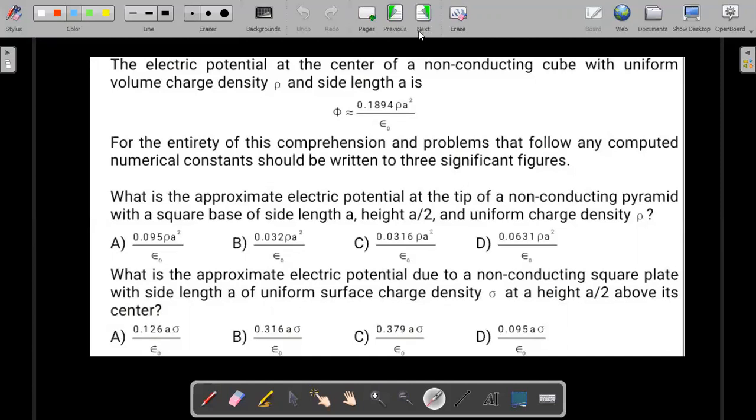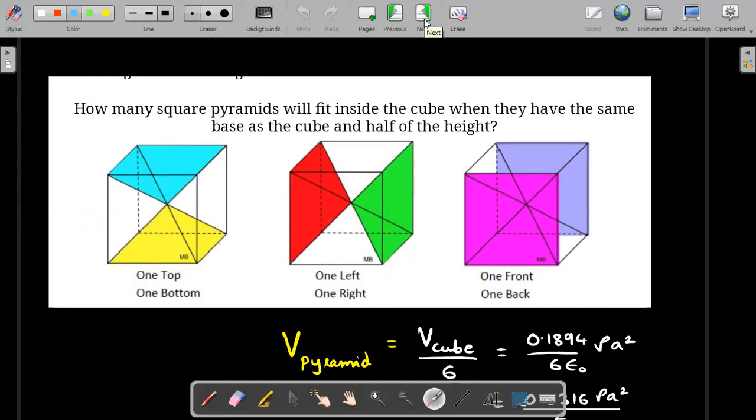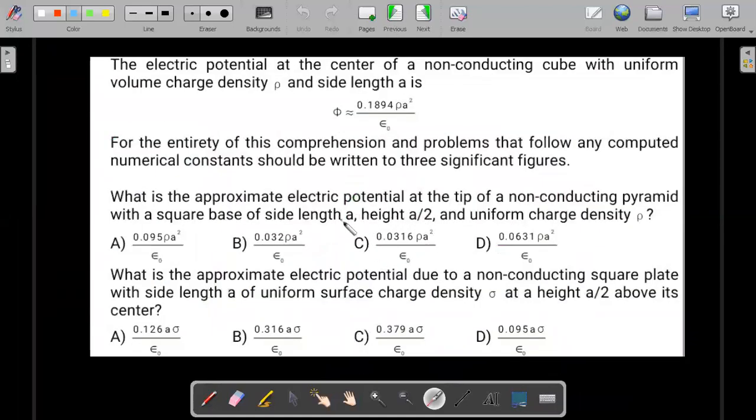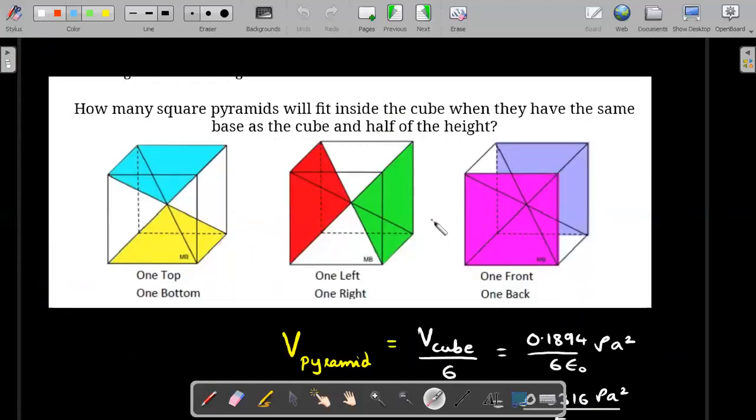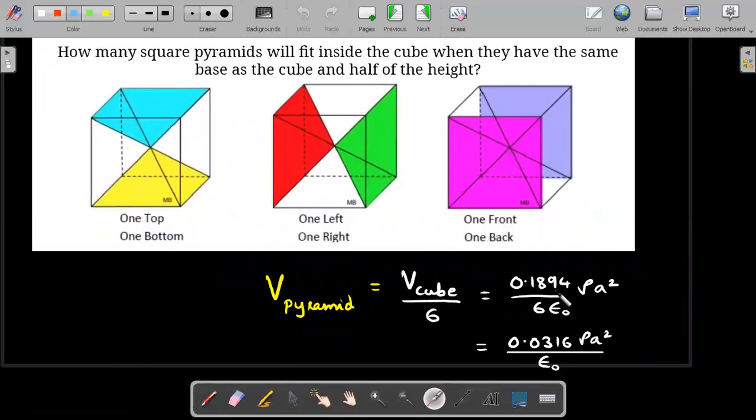Here's the solution for the first part. Knowing that the center of the cube potential is known to us, we can visualize that each solid cube is made of six pyramids of square base side a and height a/2. I tried to mark those six pyramids in three different diagrams - one top, one bottom, one left, one right, one front, and one behind. Since potential is a scalar and obeys the superposition principle, the potential due to this yellow pyramid at its apex would be one-sixth of the potential calculated for the cube.